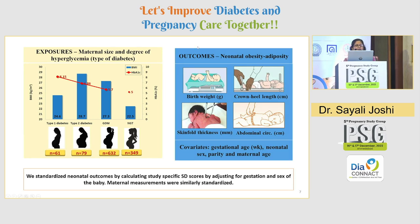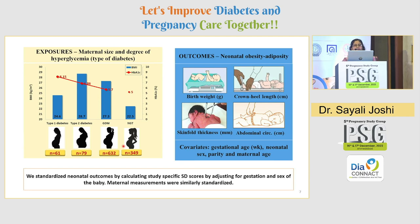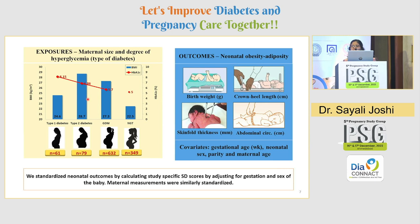We included 61 mothers with type 1 diabetes, 79 mothers with type 2 diabetes, 632 with GDM, and a control group of 349 women with normal glycemia. Maternal HbA1C measurements served as a surrogate for degree of maternal hyperglycemia. Mothers with type 1 diabetes were the most hyperglycemic, and those with GDM were the least hyperglycemic. Regarding obesity indicators, mothers with type 1 diabetes were the least obese and those with type 2 diabetes were the most obese. This unique combination allowed us to separate out the effect of these two exposures on neonatal outcomes.